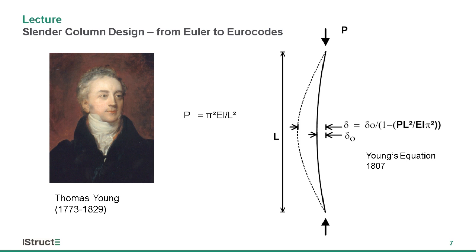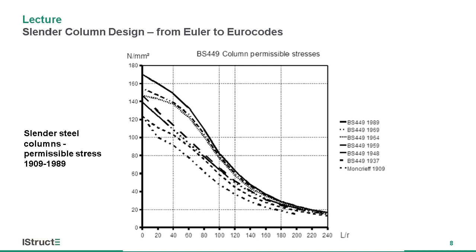For steel at least, the theory of slender column design was basically settled by the early 20th century, and since then there have only been minor adjustments to minor details. A graph of the permissible stresses for mild steel columns over the period 1909 to 1989 shows that the lowest line is 1909 and the top line is BS 449 1989. If you take out the changes in yield strength and the reductions in safety factors applied over the years, you can see those curves are all very similar — not a lot changed between 1909 and 1989.